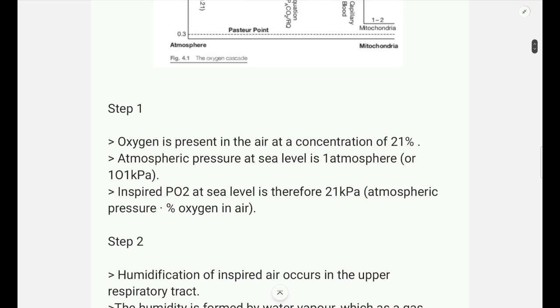Now we will try to understand how we get all these values at different levels. So we will start with the atmospheric air. The atmospheric pressure is 101 kPa and the percentage of oxygen in atmospheric air is 21%. So when we multiply the two, we get a value of 21 kPa.